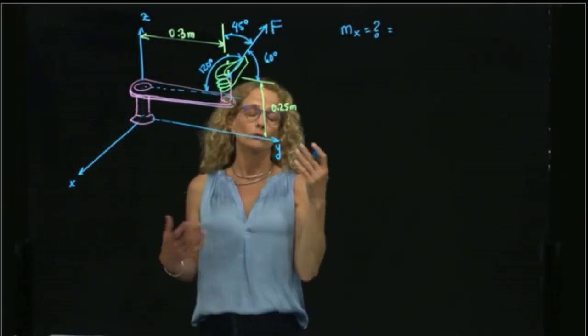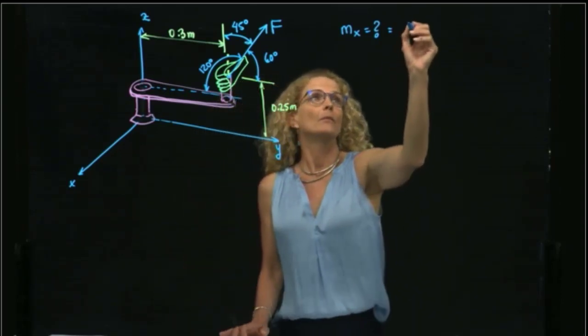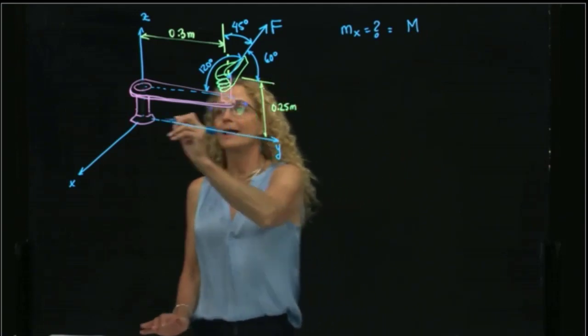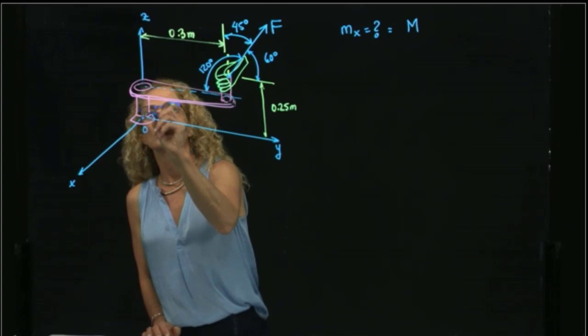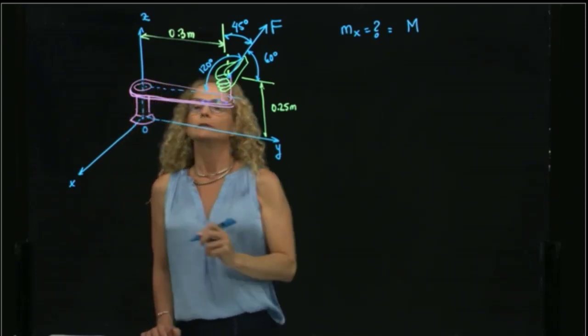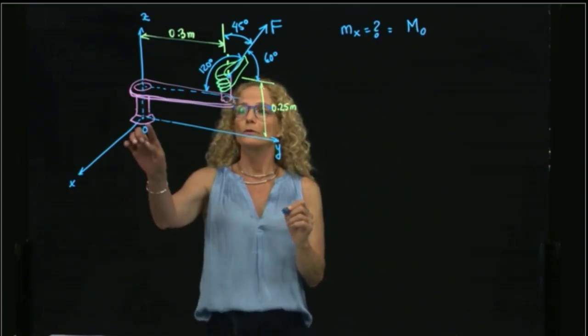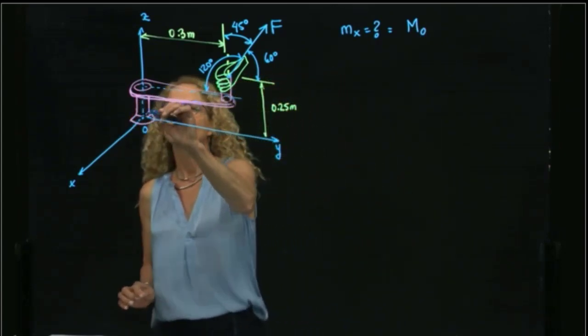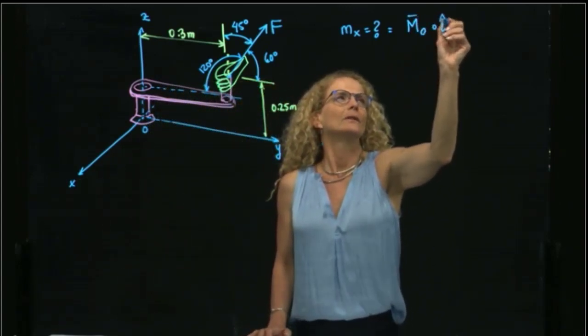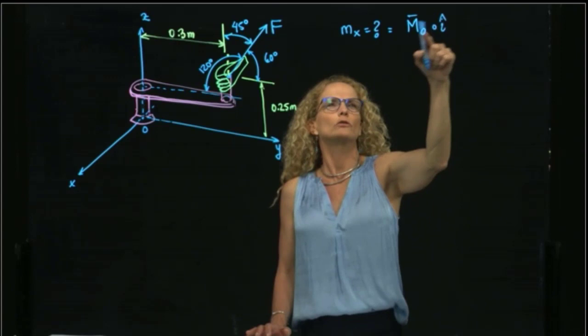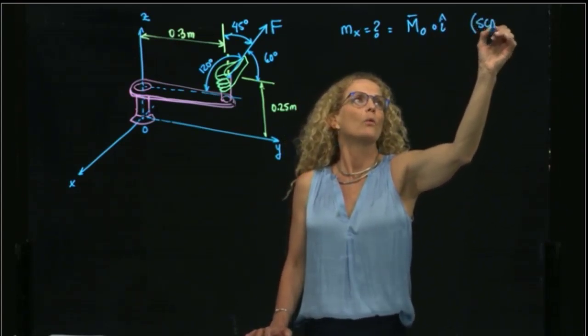As you recall, the definition of moment with respect to an axis is the moment with respect to any point, and in this case we call the origin of our coordinate system O. If the moment with respect to any point of the axis, in this case the origin belongs to that axis, scalar the axis where we want to calculate the moment, along the axis.